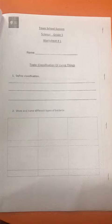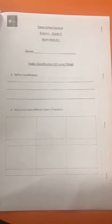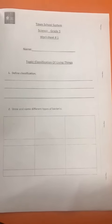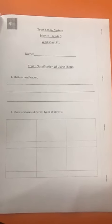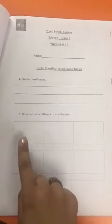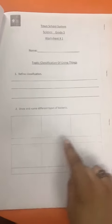You just write in the search option types of bacteria and you will have all the types of bacteria. Here is given six types and you have to draw the types in these big boxes and write their name in these small boxes.